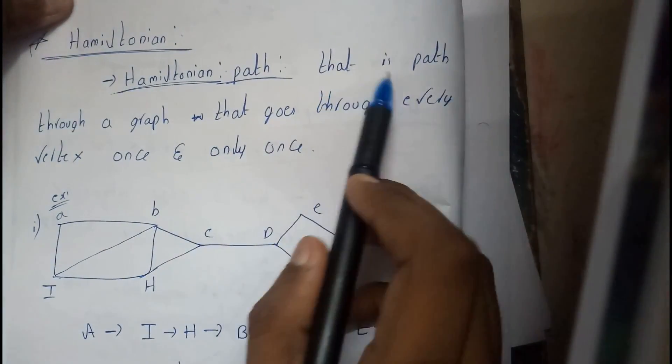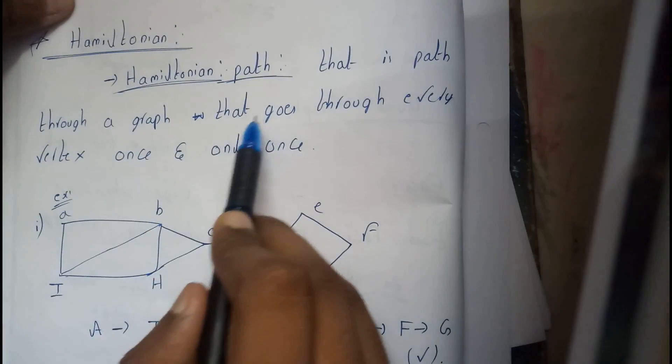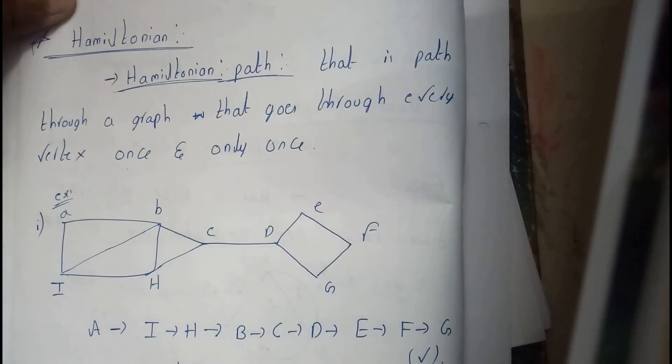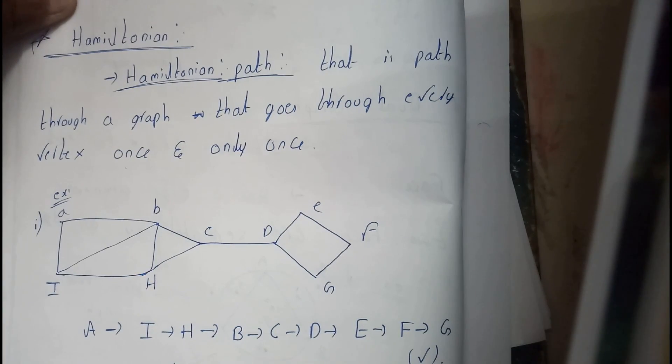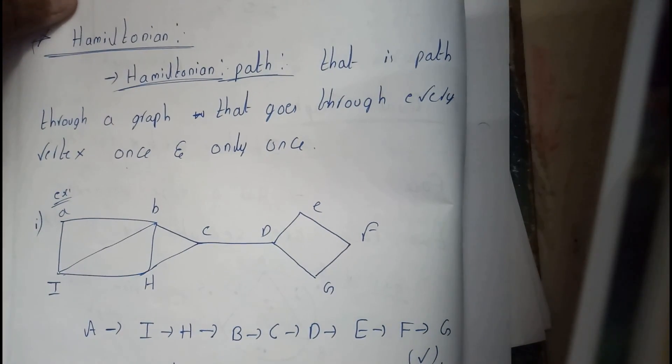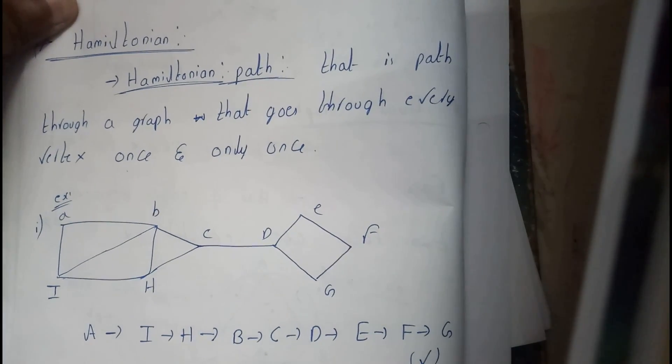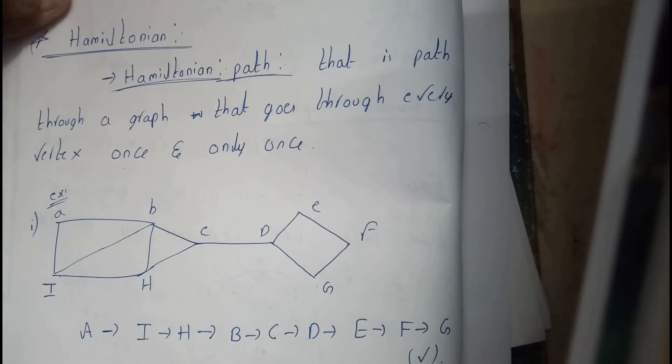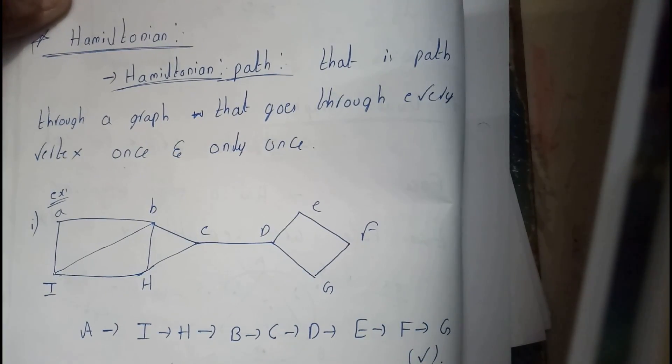Hamilton path is a path through a graph that goes through every vertex once and only once. It is not necessary that it should pass through every edge, but it should pass through a single vertex only once.